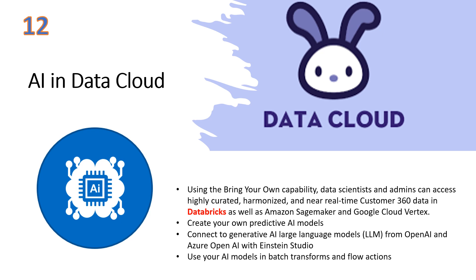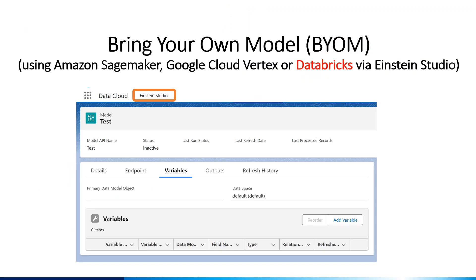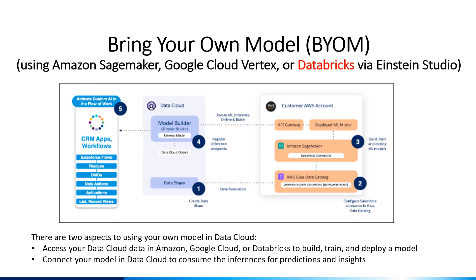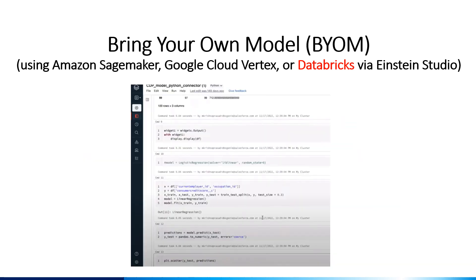Databricks now joins Amazon SageMaker and Google Cloud Vertex as options for the Data Cloud Bring Your Own Model. Within Data Cloud, you can define your model using Einstein Studio. Supply the details, the fields that influence the prediction outcome in the primary data model object, and the output object for the prediction. For the Bring Your Own Model, a data share is created in Amazon, Google Cloud, or Databricks, where the Data Cloud data is used to build, train, and deploy a model. Then the model inferences are consumed in Data Cloud and used for predictions and insights. Databricks, a Lakehouse platform in the cloud, is the newest addition to the Data Cloud Bring Your Own Model options.